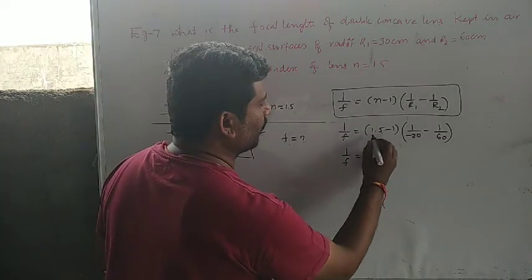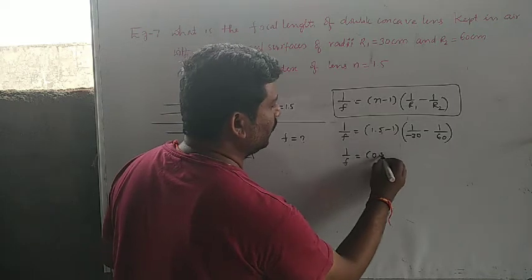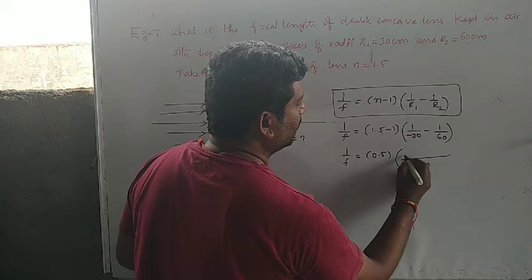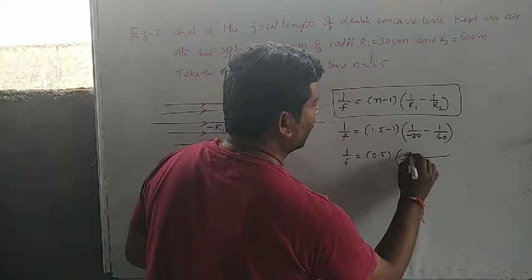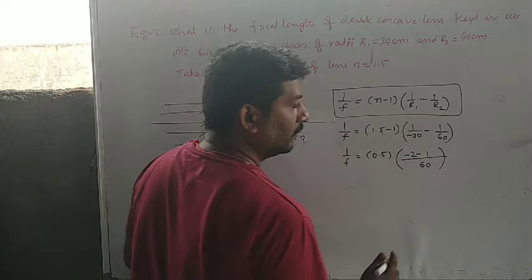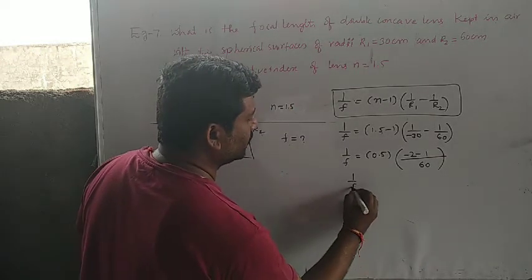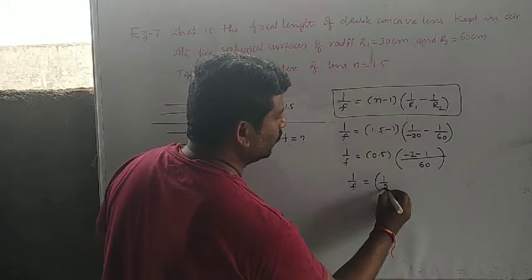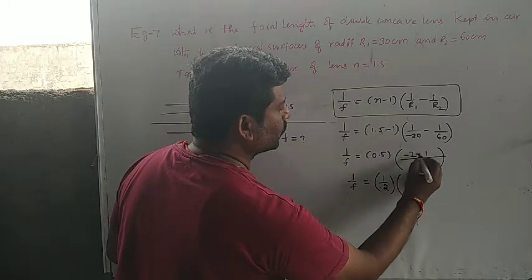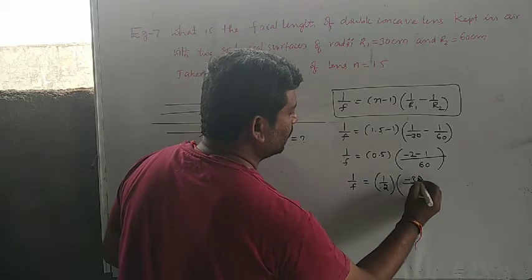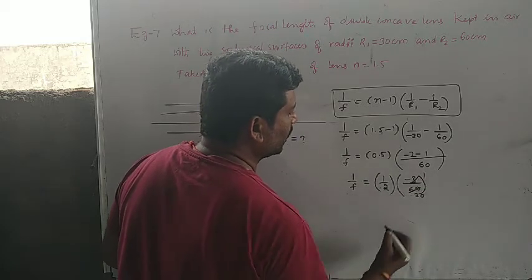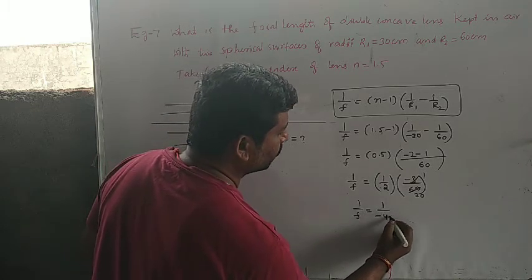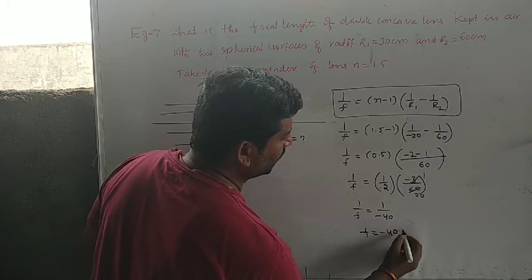Now 1 by f equals 1.5 minus 1, which is 0.5. Taking LCM 60, this is minus 2 minus 1. So 1 by f equals 0.5, which can be written as 1 by 2, times minus 2 minus 1, equals minus 3 by 60. 3 goes into 60 twenty times. So 1 by f equals 1 by minus 40, therefore f equals minus 40 centimeters.